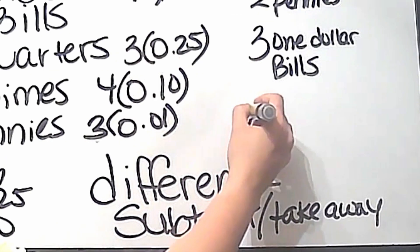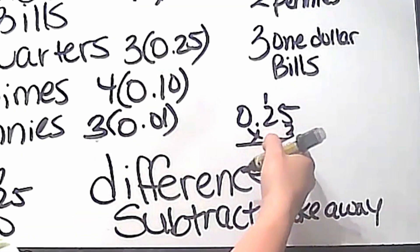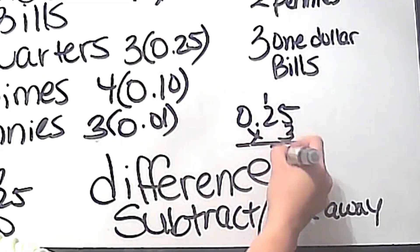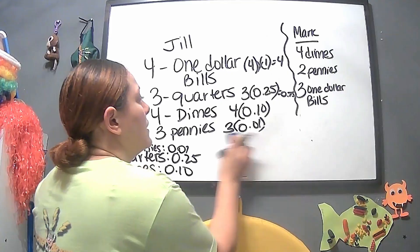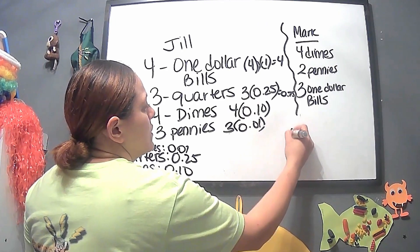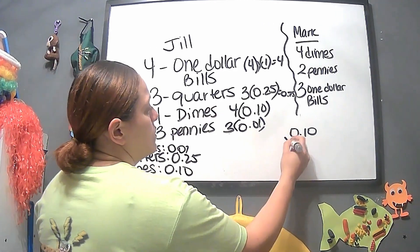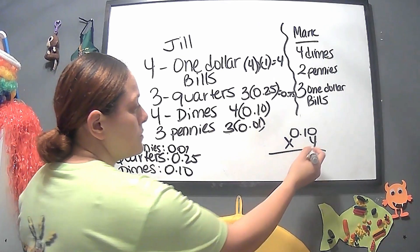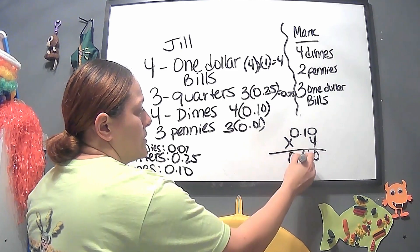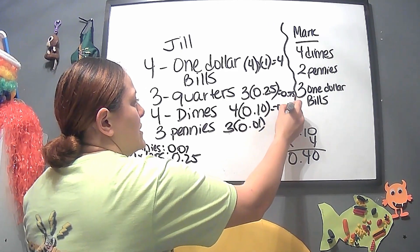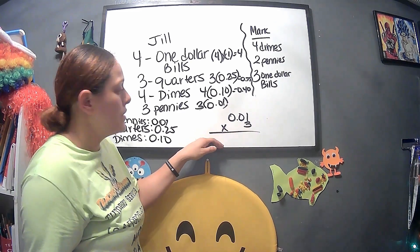For dimes: four times 0.10 — four times zero is zero, four times one is four, four times zero is zero — so we have 40 cents, or 0.40. For pennies: 0.01 times three — three times one is three, three times zero is zero, keeping the decimal point in place, three times zero is zero — so that is three cents, or 0.03.